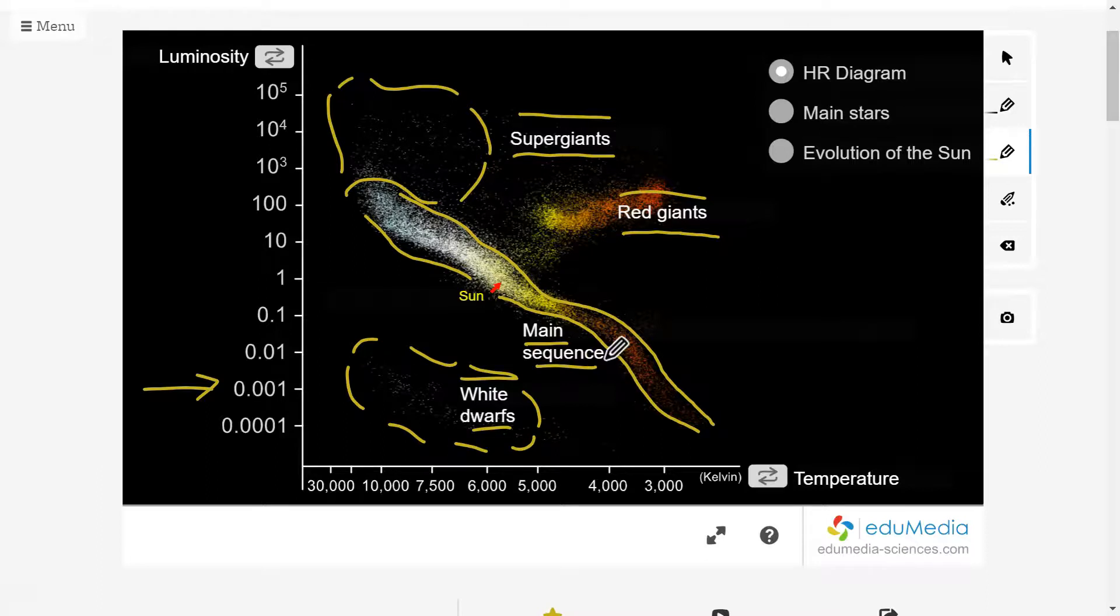And astronomers call that the main sequence. In other words, most stars spend most of their time on the main sequence. And our favorite star, the Sun, is right about here in the main sequence. The little red arrow shows you where the Sun would be. The Sun, by definition, has a luminosity of 1. And the Sun is about a temperature of between 5,000 and 6,000 Kelvin. So again, not the coldest star, and also not the hottest star in the whole universe of stars that we can see.